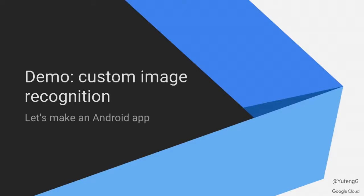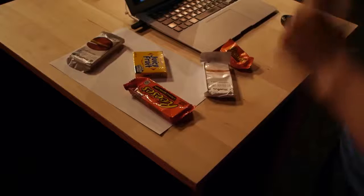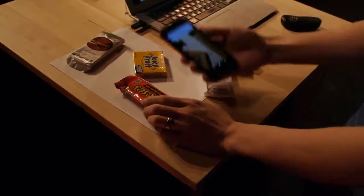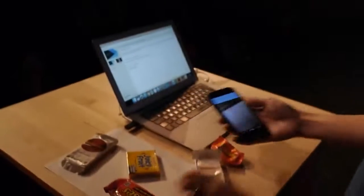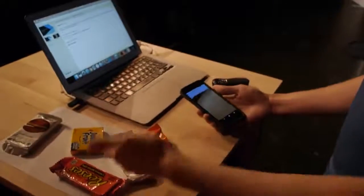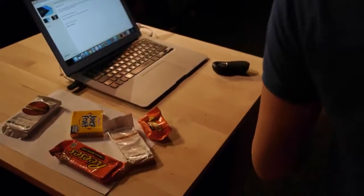So, let me start by showing you guys a little demo of what I've put together. And then we'll talk through how we might build something like this. It's a simple demo, mainly to demonstrate the core functionality. What I've got here is a phone with a little app. If we switch over to the camera, I have on the table a few different candies.